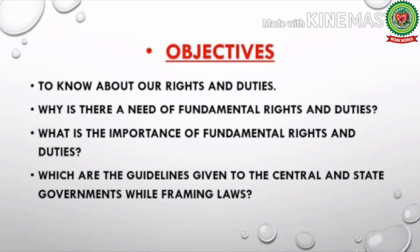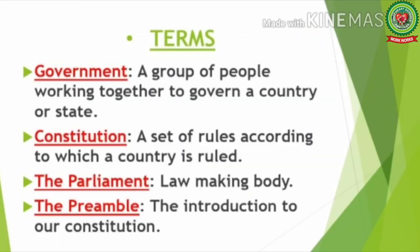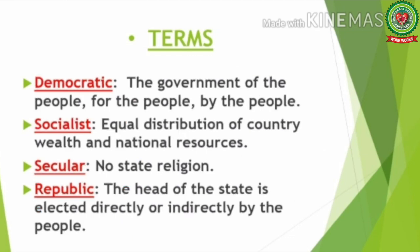Now let us discuss the terms of today's topic. Number one — Government: a group of people working together to govern a country or state. Number two — Constitution: a set of rules according to which a country is ruled. Number three — Parliament: the law-making body. Number four — Preamble: the introduction to our constitution.